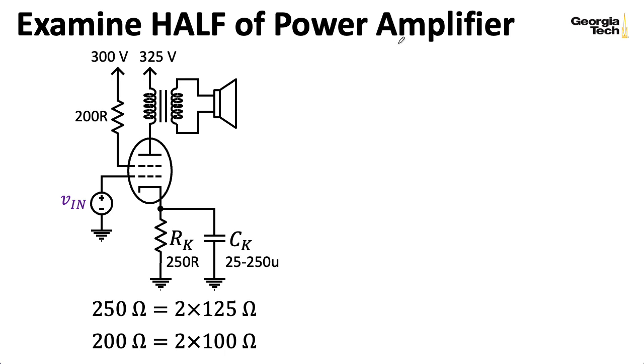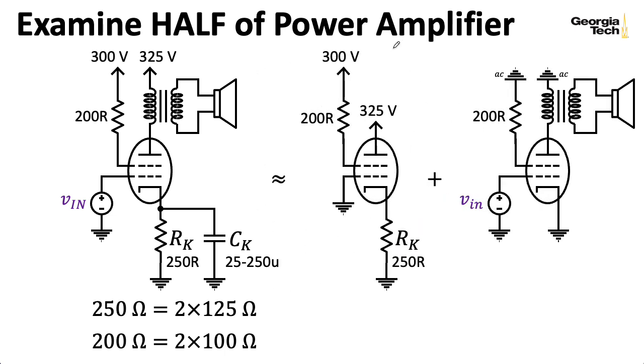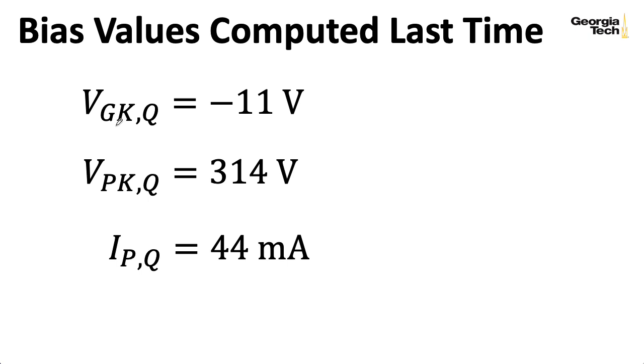Remember from the last lecture that our overall approach is to treat one half of the push-pull amplifier, and taking half of the amplifier and splitting it into its DC bias and small signal circuits. Last time, we looked at the biasing, and in this lecture, we're going to perform a large signal analysis. In the last lecture, we computed a grid-to-cathode bias voltage of minus 11 volts, a plate-to-cathode bias voltage of 314 volts, and a plate current of 44 milliamps.